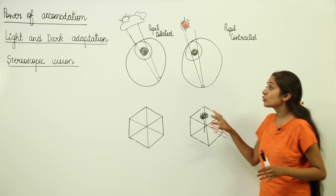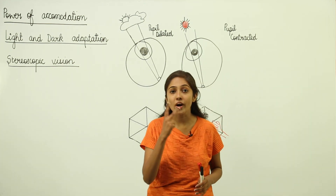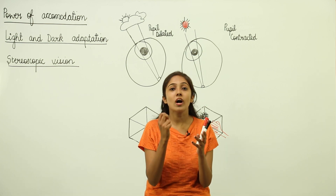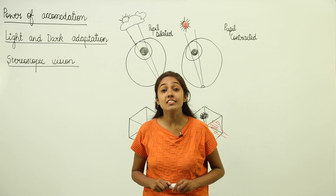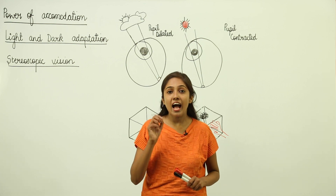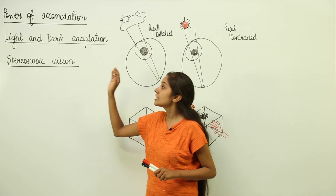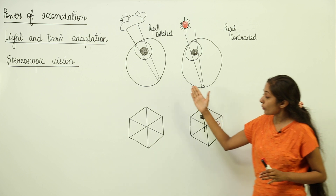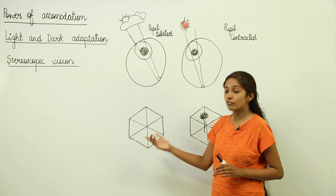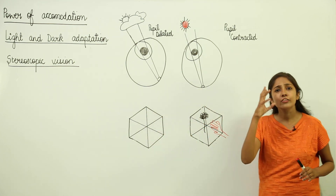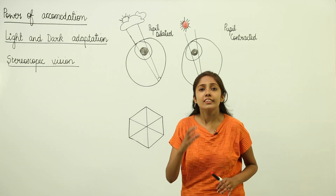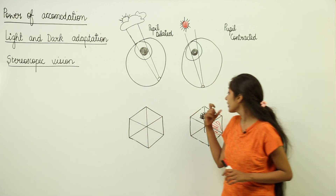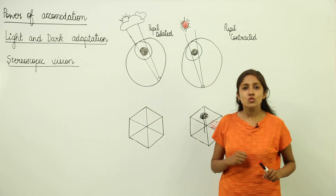This is possible because of your two eyes. God has gifted you these two eyes so that you can judge distances accurately. When you see an object from all angles, a three-dimensional image is formed by the brain, and in this way you can accurately locate the distance.